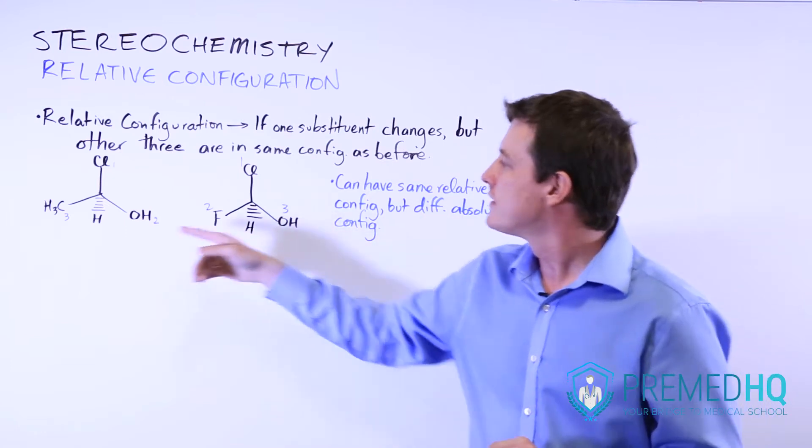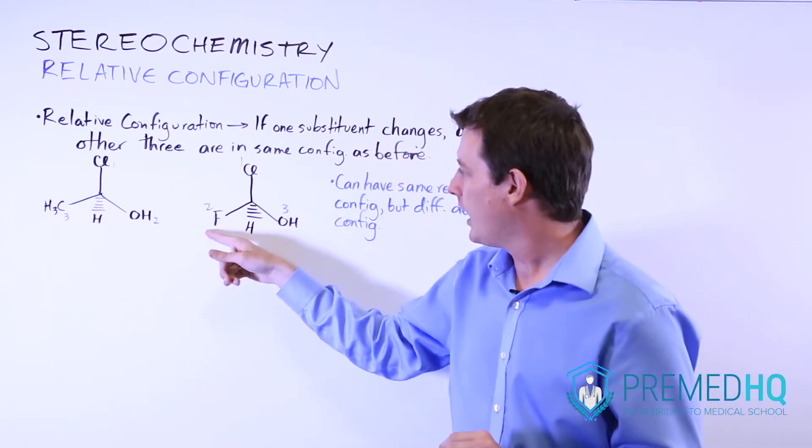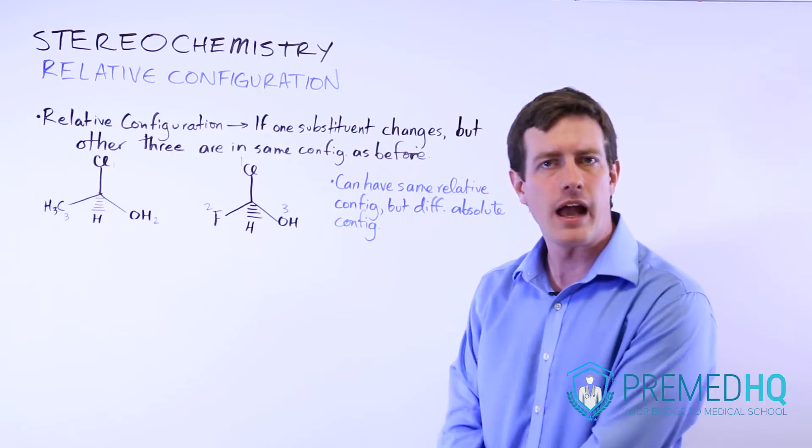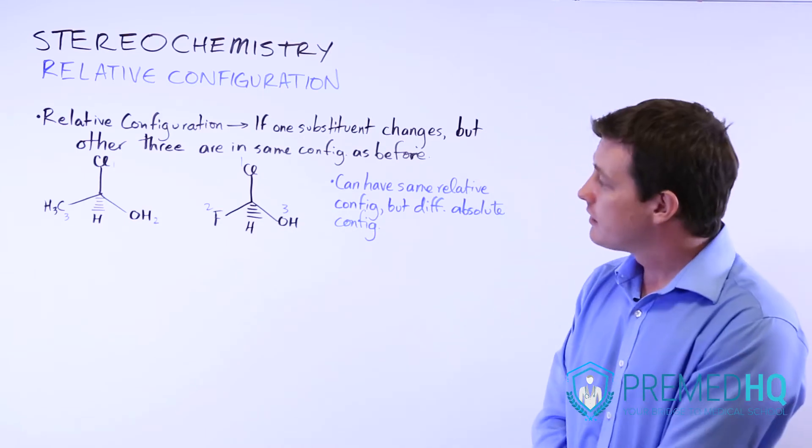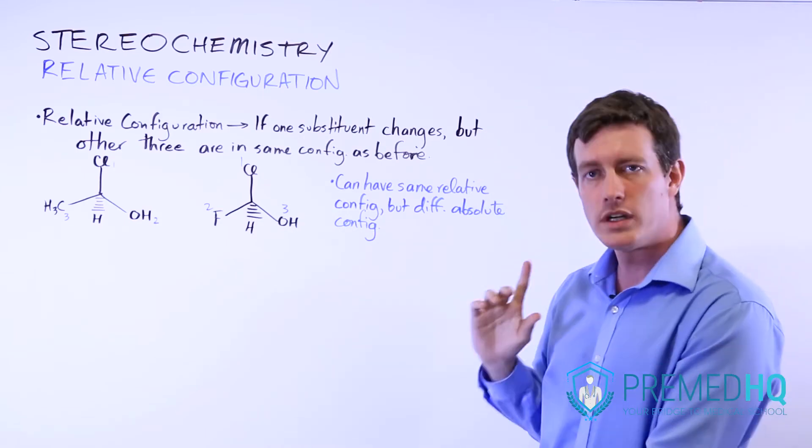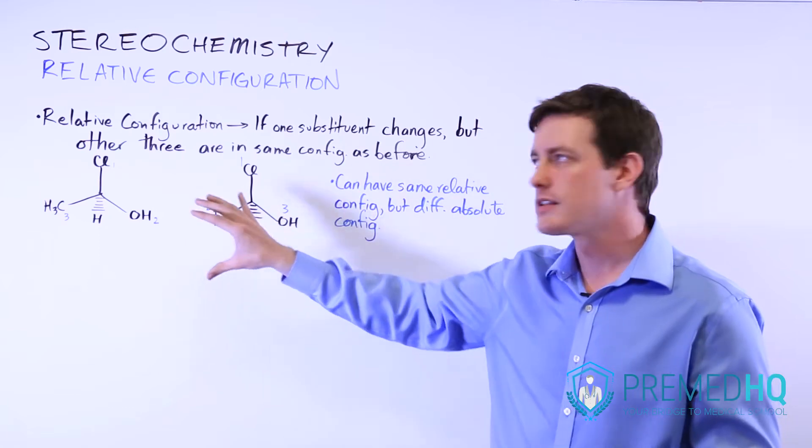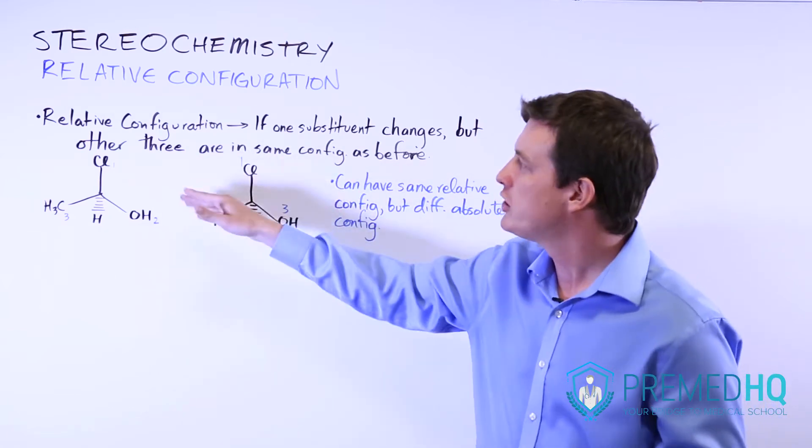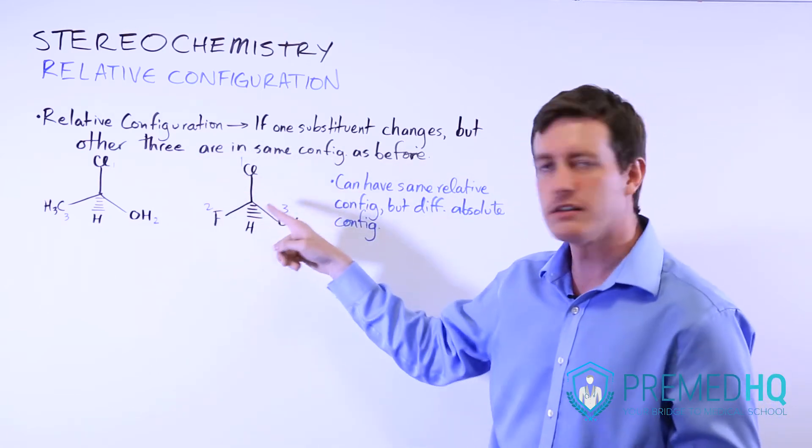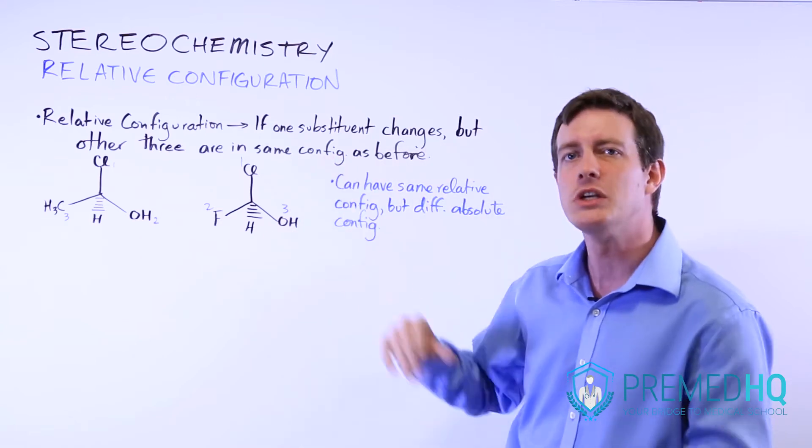And the only difference is here we have the methyl group, and here we have a fluorine atom. And so relative configuration is when you change one substituent, but everything else remains in the same spatial configuration relative to that central carbon and to each other.